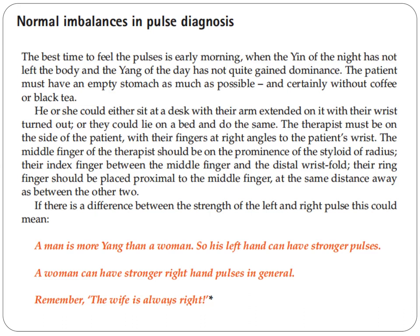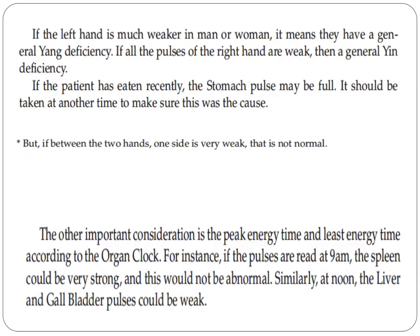If there is a difference between the strength of the left and right pulse, this could reflect yang differences — a man's left hand can have stronger pulses, while a woman can have stronger right hand pulses in general. If the left hand is much weaker in either a man or a woman, it means they have a general yang deficiency. If all pulses of the right hand are weak, that also indicates general yang deficiency. A significant asymmetry between the two hands is not normal. If the patient has eaten recently, the stomach pulse may be full and should be re-assessed at another time.